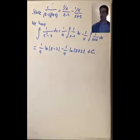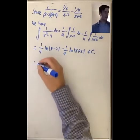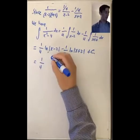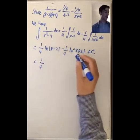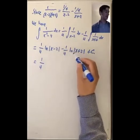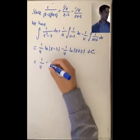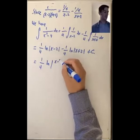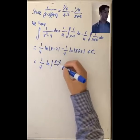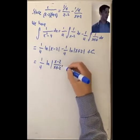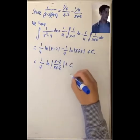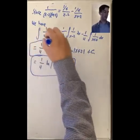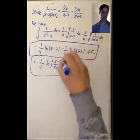The result is 1/4 natural log absolute value of x minus 2, minus 1/4 natural log absolute value of x plus 2, plus C. You can rewrite this using log rules: 1/4 times the natural log of the absolute value of the quotient x minus 2 over x plus 2, plus C. But either way is fine — these two answers are equally correct.